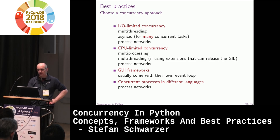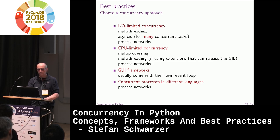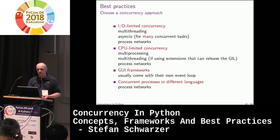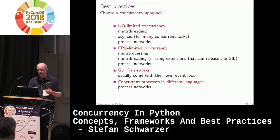Process networks are kind of universal but add overhead, so don't use them for simple problems. For CPU-limited concurrency, multi-threading only works with limitations — only if extensions can release the GIL. Otherwise use multiprocessing or process networks. GUI frameworks usually come with their own event loops, documented with how to define handlers and process events like button clicks. If you have processes developed by different teams in different languages, you have to use process networks.